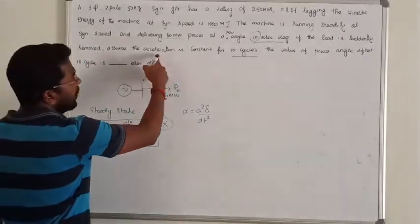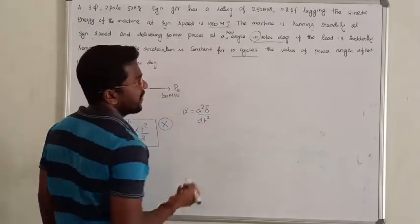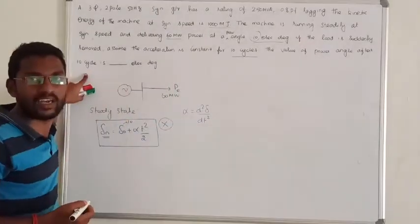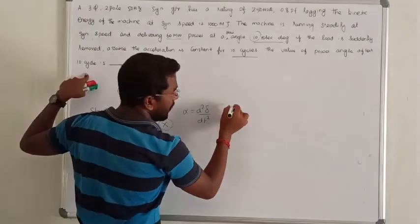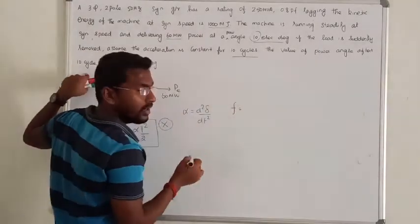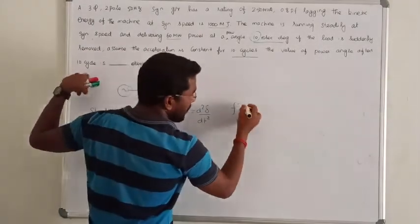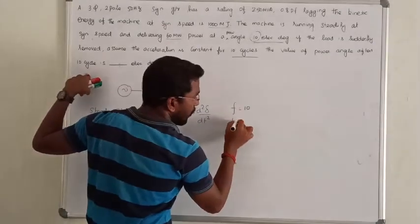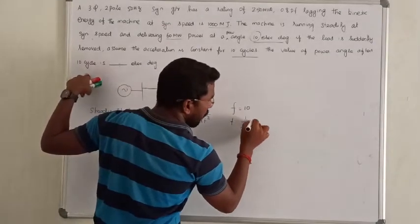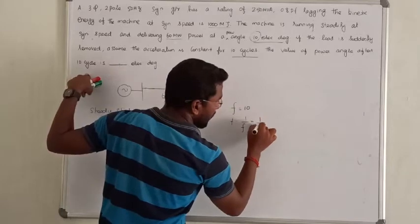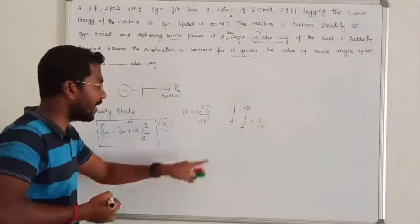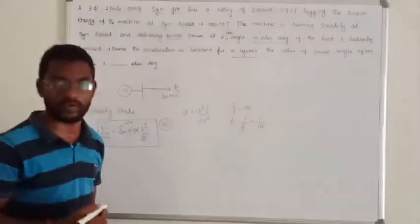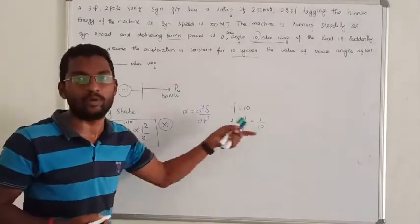The value of the power angle after 10 cycles — 10 cycles correspond to a time of 1 divided by f. The frequency is 50 Hz, and the number of cycles is 10, so t equals 10 divided by 50, which is 1 by 5. Wait — t equals number of cycles divided by frequency: 10 divided by 50, giving t equal to 1 by 5, or alternatively the period of 10 cycles at 50 Hz. So the value of t is 1 by 5 seconds — that is, 0.2 seconds.